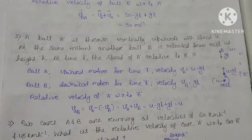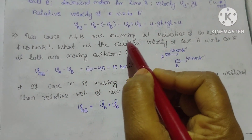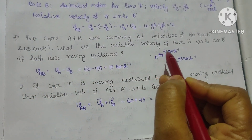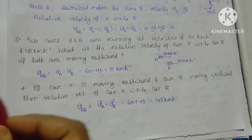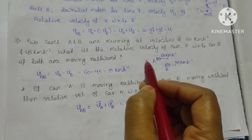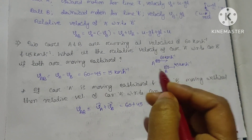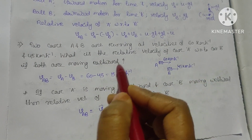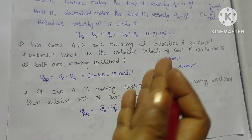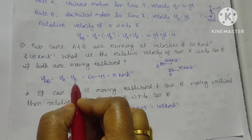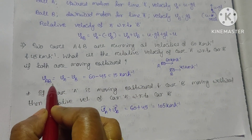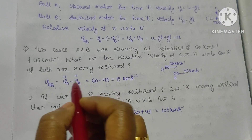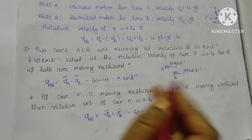The next question: Two cars A and B are running at velocities 60 km/hr and 45 km/hr. What is the relative velocity of car A with respect to car B if both are moving eastward? Since they move in the same direction, we subtract: VAB = VA minus VB = 60 minus 45 = 15 km/hr.